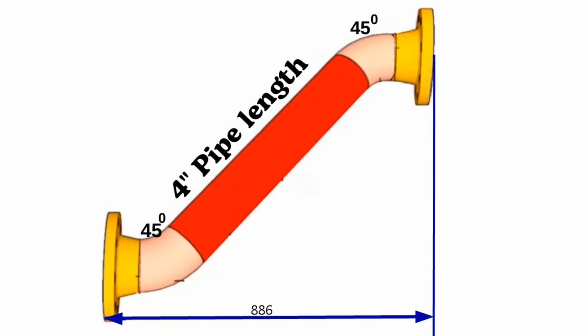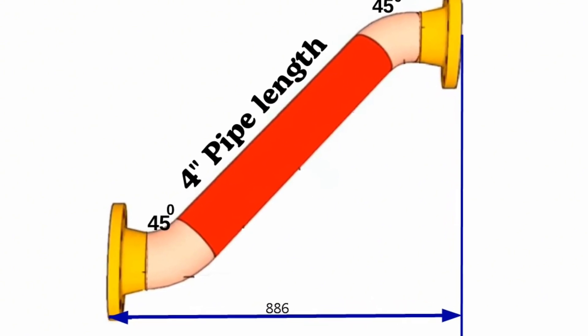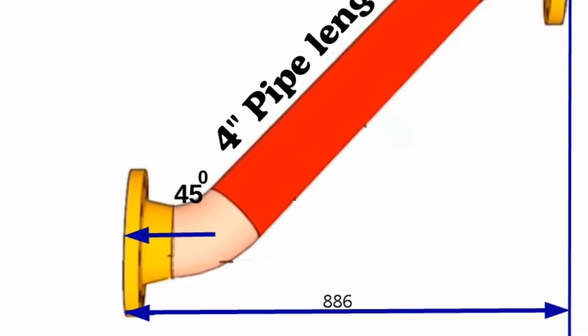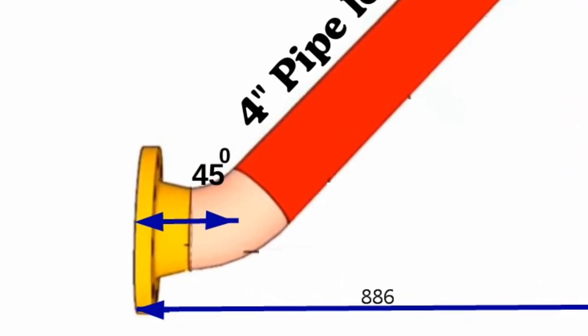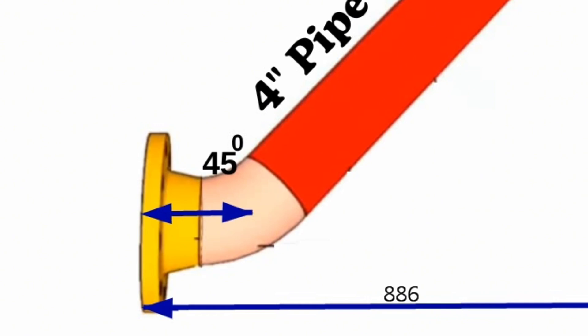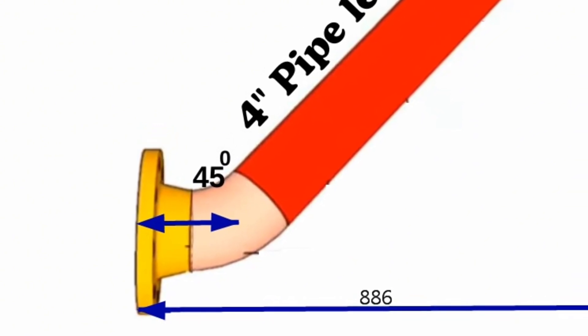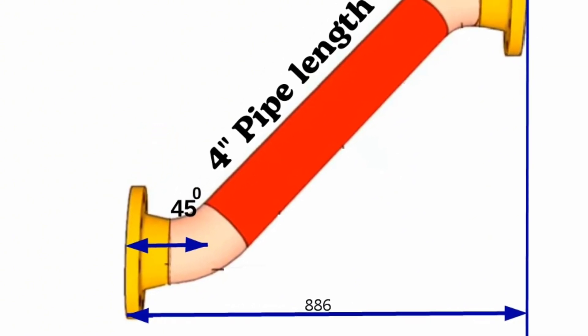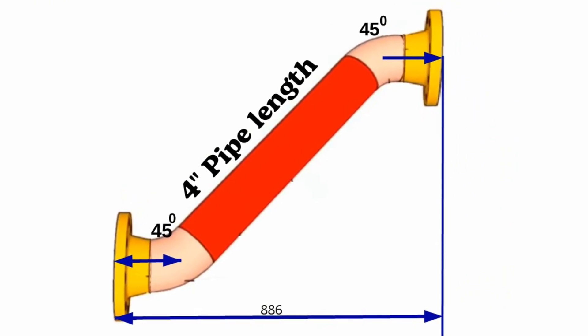First, we will calculate the distances from the center of the 45-degree butt weld elbow in the pipeline to the flange face. Since both sides of the pipeline have the same size flange and elbow, this operation will be the same for both sides of this pipeline.